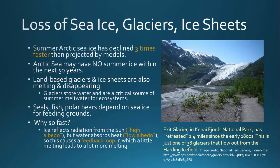Another issue is land-based glaciers and ice sheets. That includes glaciers in the Arctic, but also the Antarctic ice sheet and the ice sheet in Greenland. Greenland and Antarctica are the two major sources of land-based ice and glaciers that we're concerned about when we talk about sea level rise.